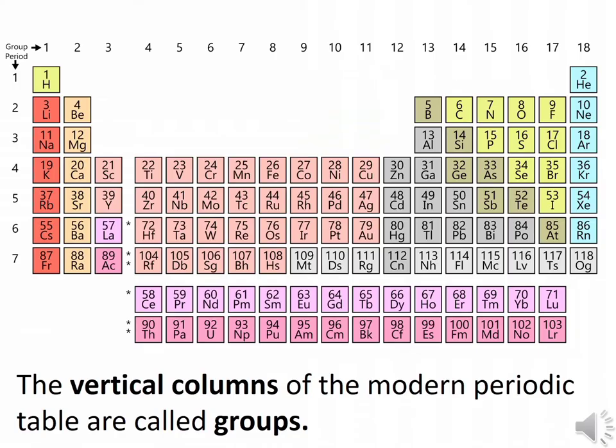The elements are arranged in such a way that information about the elements and their compounds are easily revealed. The vertical columns of the modern periodic table are called groups, as they are in Mendeleev's table.